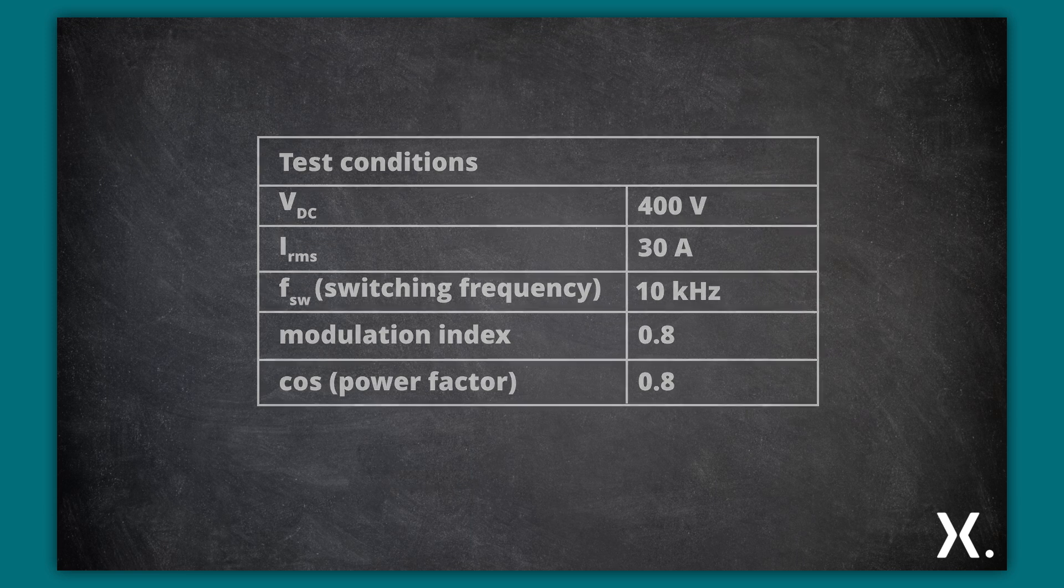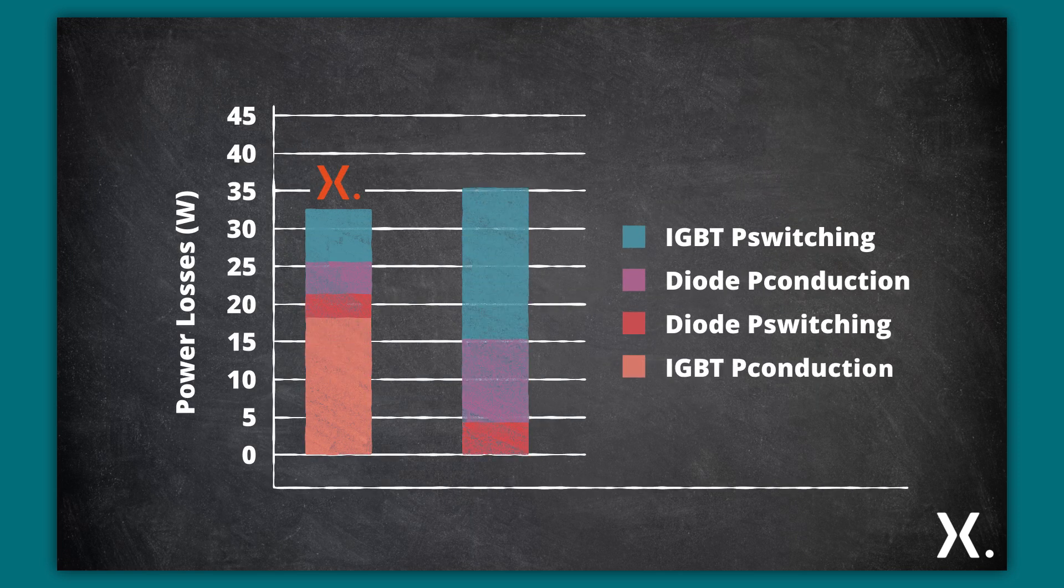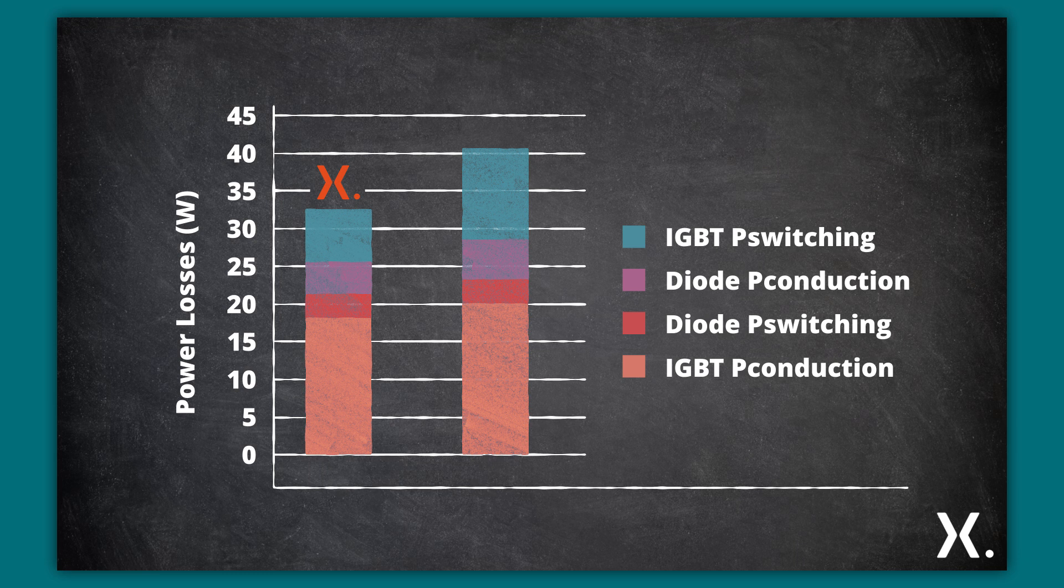Based on those simulated conditions, Nixperia's hard switching 30 amp device with a full rated silicon diode delivers the lowest switching losses.